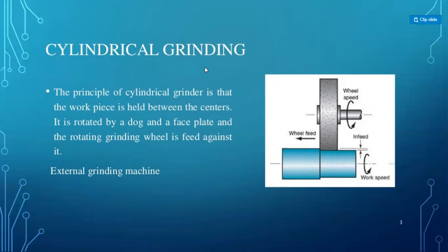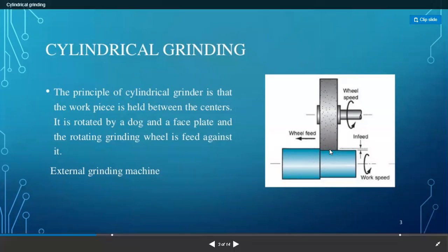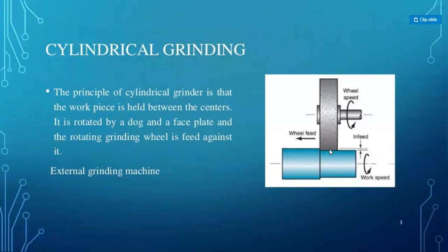In the cylindrical grinder there are two axes: the grinding wheel axis and the workpiece axis. These two axes are in a parallel position. The grinding wheel rotates and the workpiece also rotates. The amount of material to be removed from the workpiece is defined by the infeed — how much depth is to be removed from the workpiece.